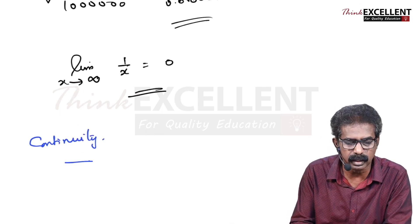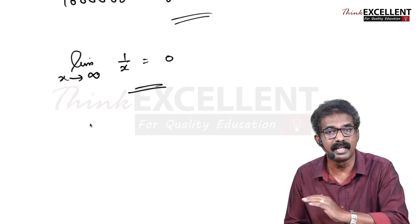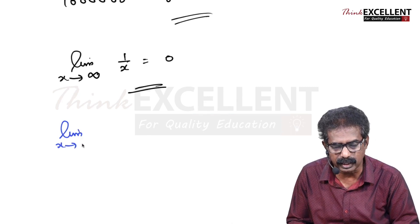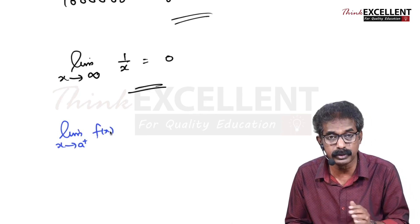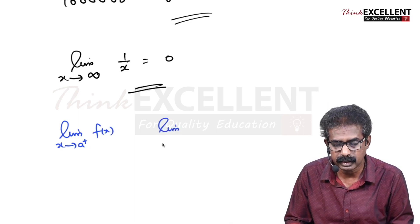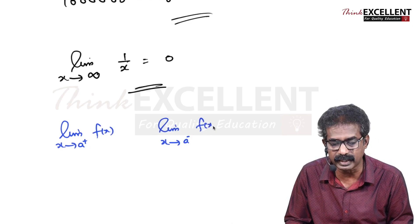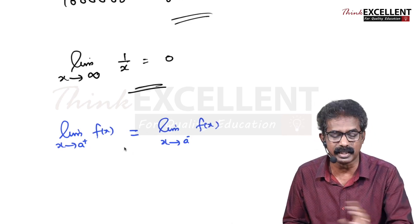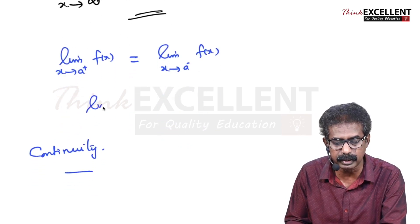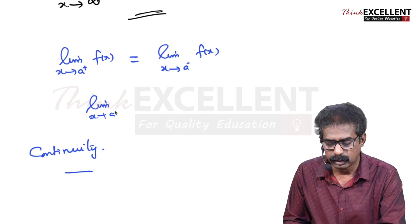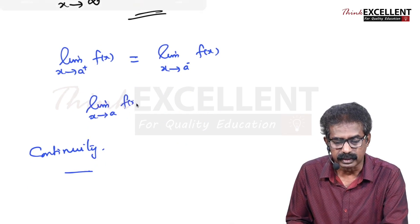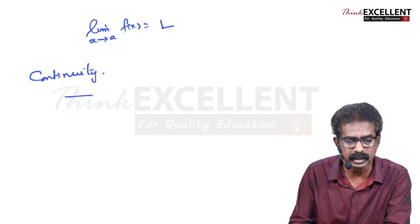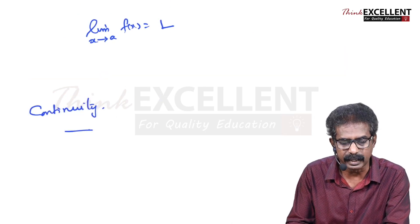For a limit to exist, you find the left limit and the right limit — both must be the same. So limit as x tends to a⁺ of f(x) and limit as x tends to a⁻ of f(x) must both be equal. When they are equal, the limit exists and that common value is the limit: limit as x tends to a of f(x) = L.